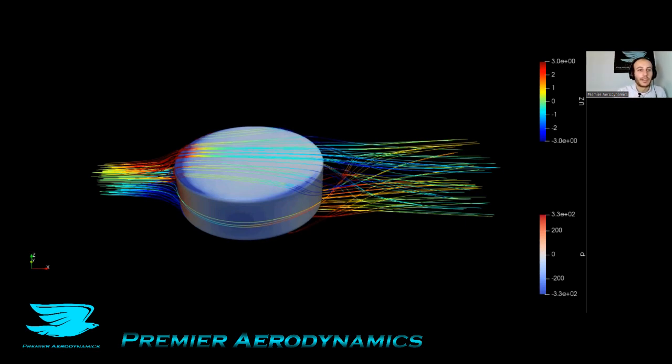You have the pressure distribution over the puck. So you have the low pressure on the side, and on the front there is some sort of high pressure as you'd expect at this stagnation point.